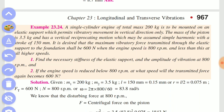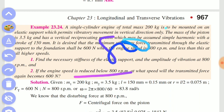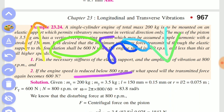Now, if the engine speed is reduced below 80 rpm, what speed will cause the transmitted force to advance again? It becomes 600 N again at a certain lower speed.